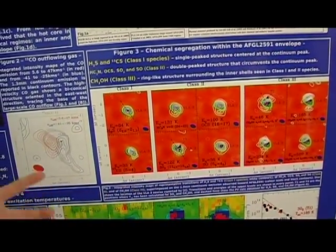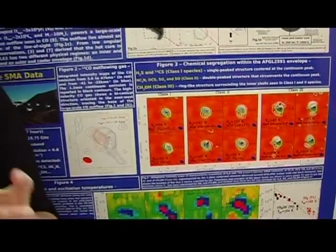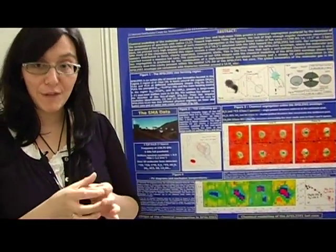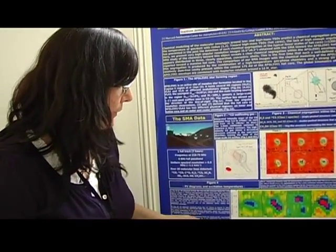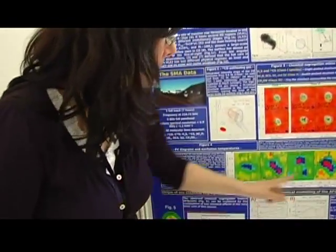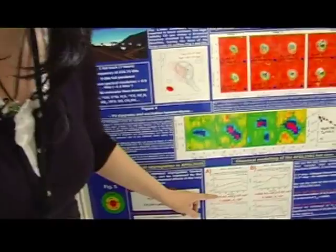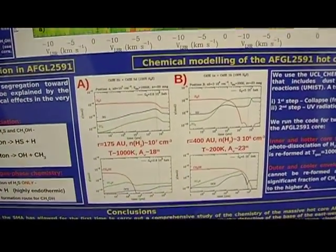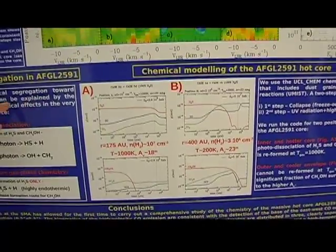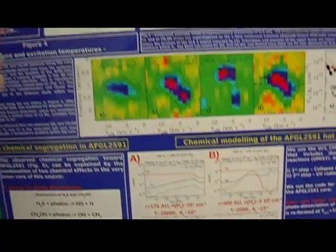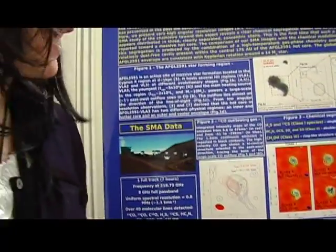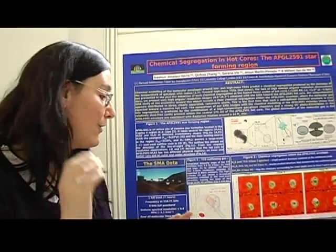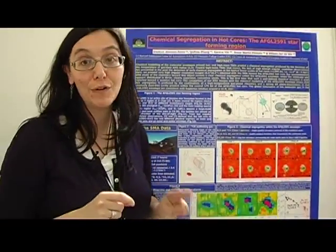This chemical segregation can be explained by a combination of different physical processes within the very inner regions of these cores. We have modelled this high-mass star-forming region and found that the chemical segregation is a combination of two chemical effects: high-temperature gas-phase chemistry, and strong UV photo-dissociation.